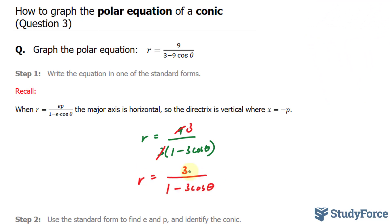Now what's interesting about this particular equation, and all equations that look like this, is that the major axis is horizontal. And the directrix is a vertical line where x equals negative p.